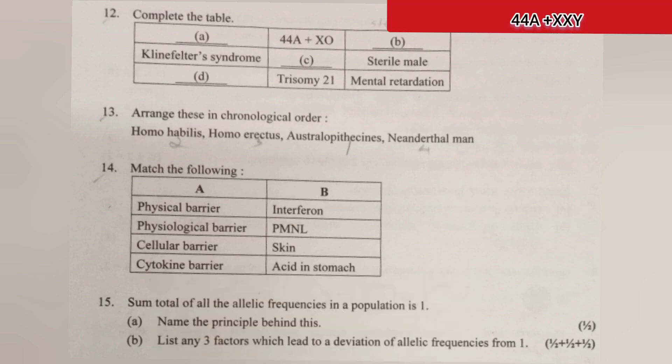Question 12: Complete the table. Answer: A. Turner syndrome. B. Sterile female or rudimentary ovaries. C. 44A + XXY. D. Down syndrome.